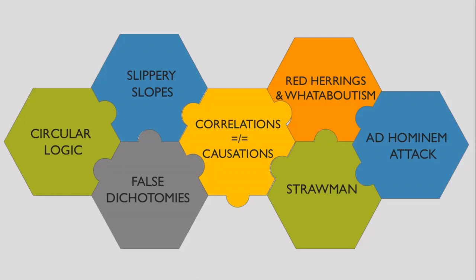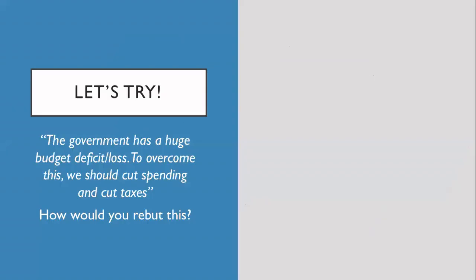Now that we've covered everything based on rebuttals, let's do a quick activity to craft a comprehensive rebuttal and see if you still remember the three-step template. Let's assume that team proposition has made an argument that says the government has a huge budget deficit or loss, and to overcome this we should cut spending and cut taxes. If you were in opposition, how would you rebut it? Let's take two minutes and think about what the different steps would be to make a comprehensive rebuttal. At the end of two minutes, I will tell you my answers and you can see if yours matched up.